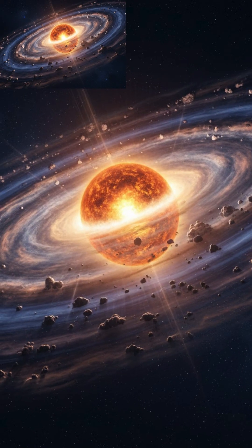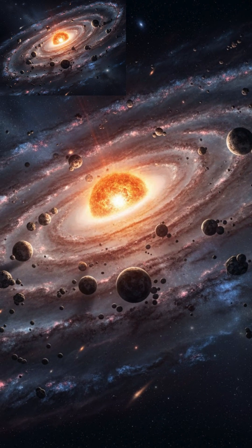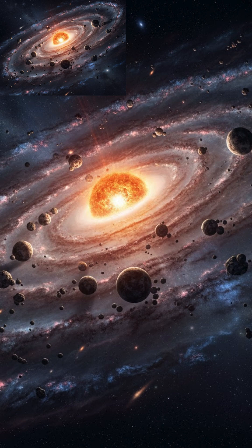As the cloud collapsed, the majority of the material gathered at the center to form the Sun, while the remaining matter flattened into a protoplanetary disk. Within this disk, dust and gas coalesced through accretion to form the planets, moons, asteroids, and other objects that orbit the Sun today.